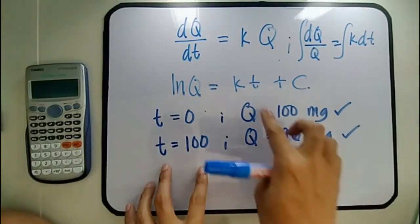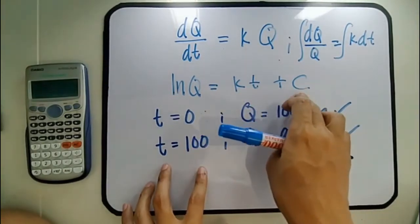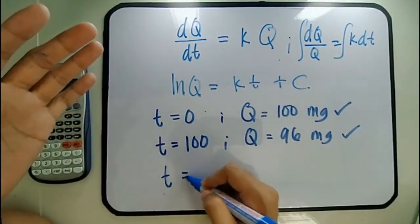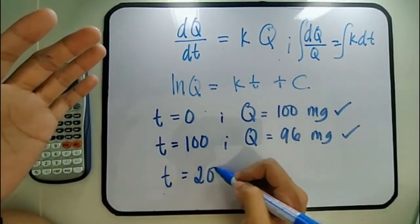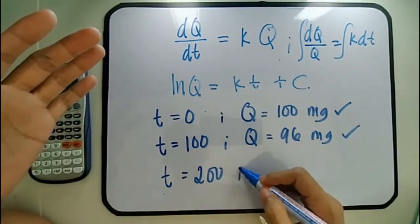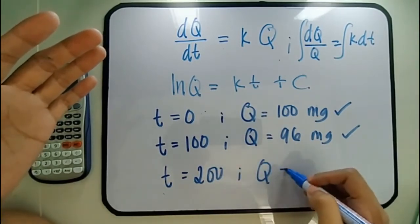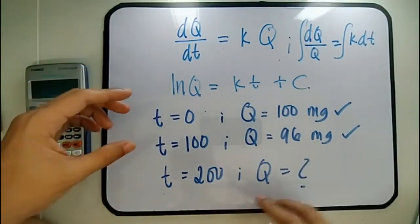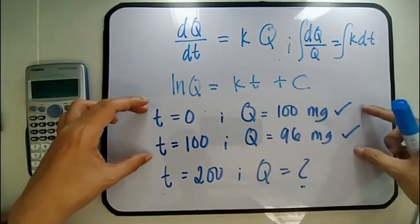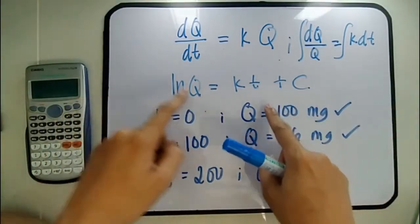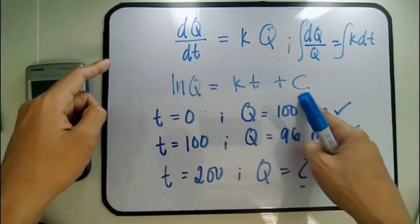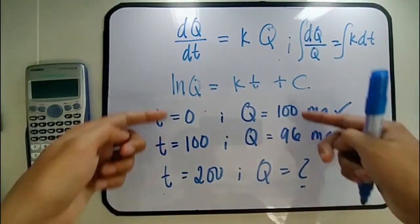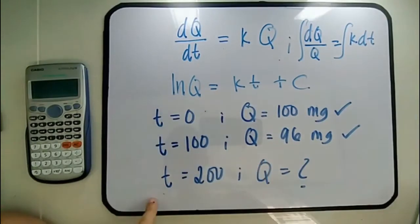Using these two boundary conditions, we can solve for K and C. What is required is: at T = 200 years, what is Q? We substitute the boundary conditions to find K and C, then substitute T = 200 to find Q.